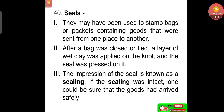Seals may have been used to stamp bags or packets containing goods sent from one place to another. After a bag was closed or tied, a layer of wet clay was applied on the knot and the seal was pressed on it — similar to how post offices use seals today. The impression of the seal is known as a sealing. If the sealing was intact, one could be sure that the goods had arrived safely and had not been tampered with.